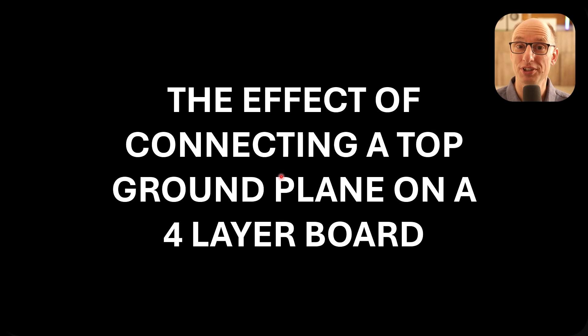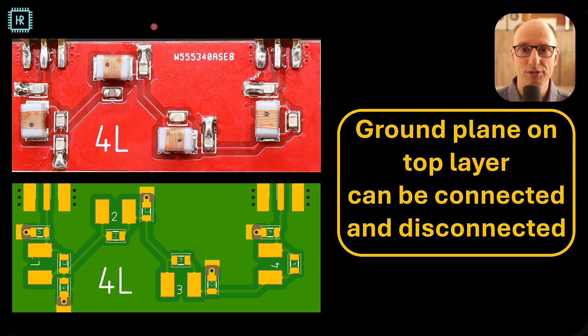The first thing we're going to do is see if we can get some improvements by using the ground plane on the top as well. Now we'll first have a look at it on the 4 layer board, since that's our perfect reference. This is the layout of the filter we'll be measuring. So you can see the board design here and the actual assembled board, and what you notice is that on these 4 spots, actually 5 spots, we can either connect or disconnect the top ground plane. You can see it here on the layout how you can do that. And let's see what this does.